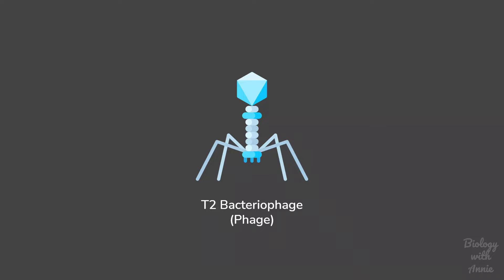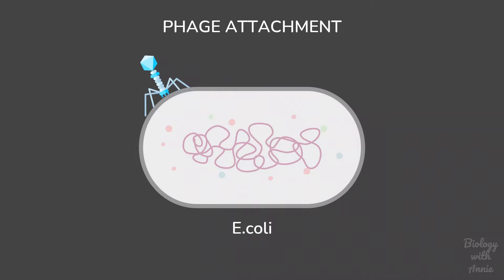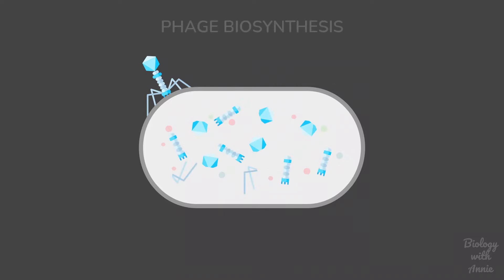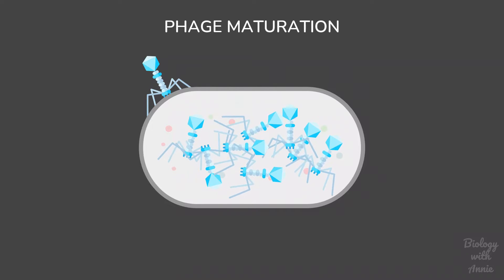This is a virus that infects a bacterium called E. coli. The T2 phage attaches to the bacterial cell wall and then injects only its genetic material into the cell. The bacterial cell is then forced to synthesize phage components which assemble to form progeny phages. The newly formed phages break open the cell to escape and infect new cells.